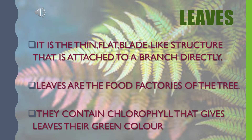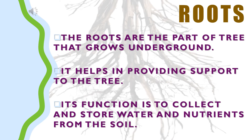Leaves are an important part of a tree. They are the thin, flat, blade-like structures attached to a branch directly. Leaves are the food factories of the tree. They contain chlorophyll, which gives leaves their green color. The roots are the part of a tree that grow underground. Roots help in providing support to the tree, and their function is to collect and store water and nutrients from the soil.